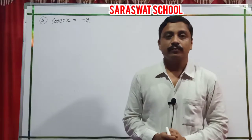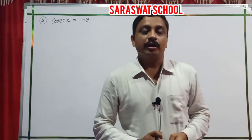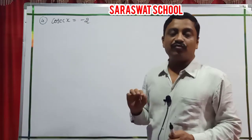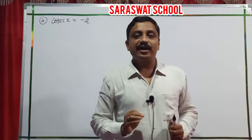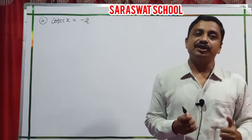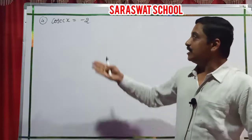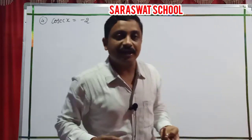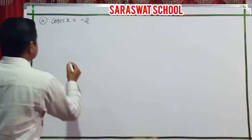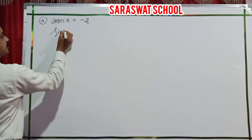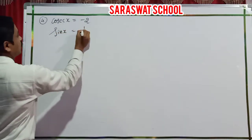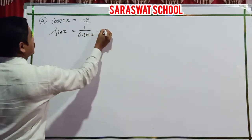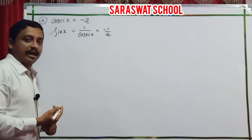Question 3 is done. Now moving to question 4: find the principal and general solutions. Cosec x is given. I translate it into sine x. Sine x equals 1 upon cosec x, which is 1 upon 2, but negative — so sine x equals minus half.